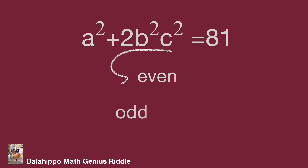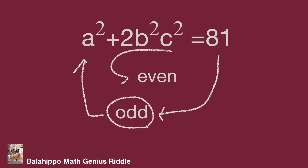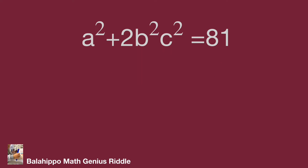The value of 2 times b squared c squared is an even number. But 81 is an odd number. So a squared plus an even number equals 81, which is an odd number. Therefore, a squared is an odd number. This is a nice finding. Next, we focus on a squared. A squared plus 2 times b squared c squared equals 81, so a squared should be less than or equal to 81, meaning a should be less than or equal to 9.